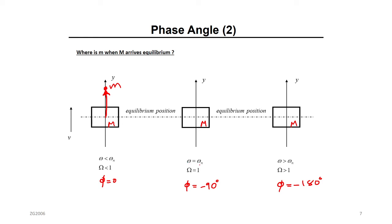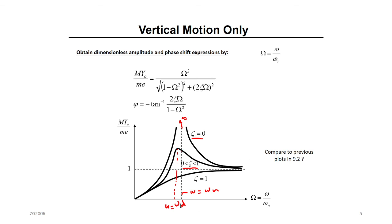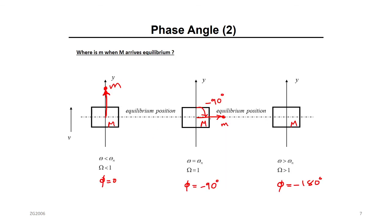When the running speed equals the natural frequency, the phase is minus 90 degrees. This means the large mass tries to move in the y direction while the small imbalance mass moves perpendicular to it. This causes a rotational whirling motion, which is dangerous. This is what causes the highest vibrations — the peak or resonance — and this is not a good operating area because the amplitude is very high.